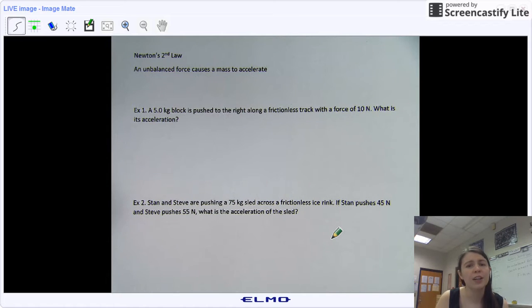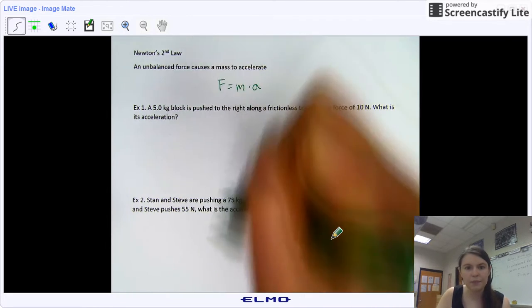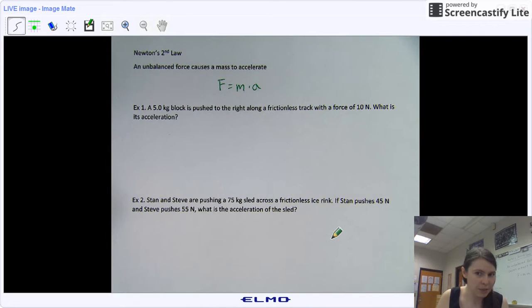When an unbalanced force causes a mass to accelerate, that is Newton's second law. Though we typically state it a bit simpler with the equation F equals M times A, where F is force, M is mass, and A is acceleration. We use newtons for force, kilograms for mass, and meters per second squared for acceleration as always.